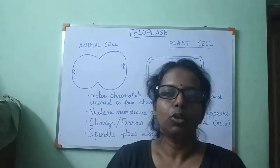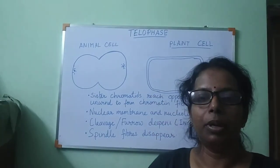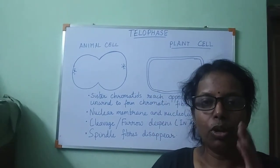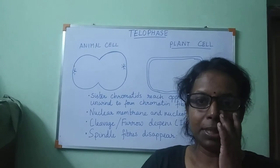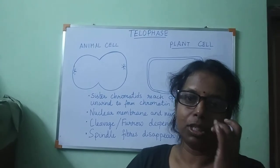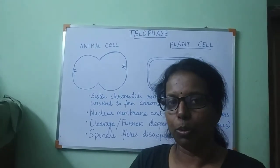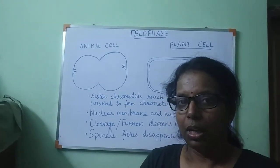The previous phase was anaphase. In anaphase, the sister chromatids migrate towards the opposite poles.